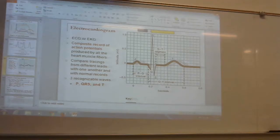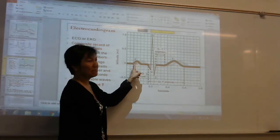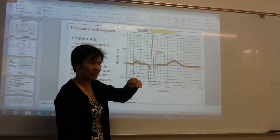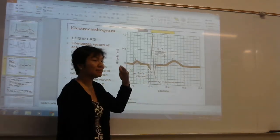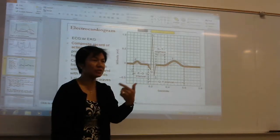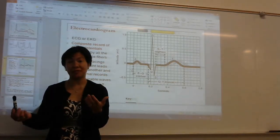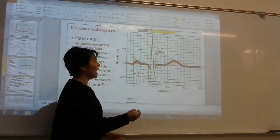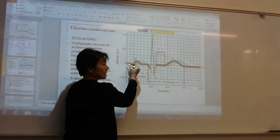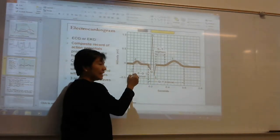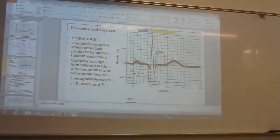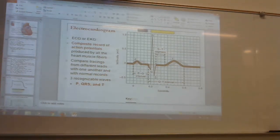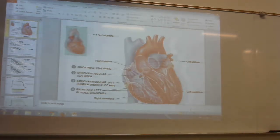The P wave is a measurement of atrial depolarization — it measures the pacemaker in the atrium. This means the atrium has been depolarized. Depolarize means stimulate, right? When you stimulate the atrium, the atrium will contract. So atrial contraction happens around the P wave. In the meantime, the pacemaker just keeps firing — this one fires first, then the atrium contracts.